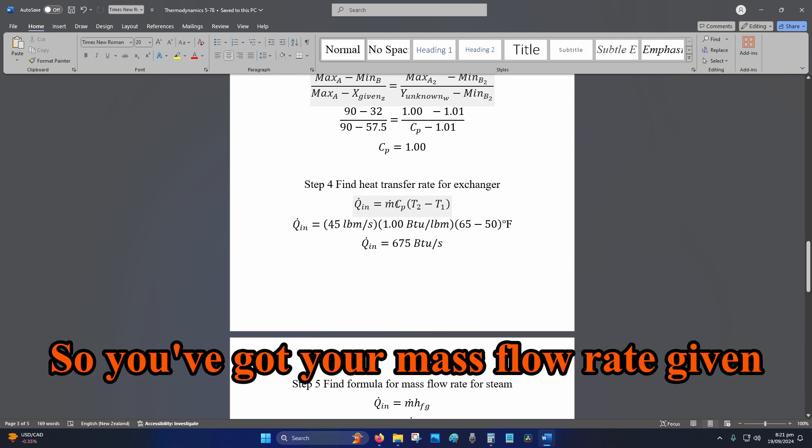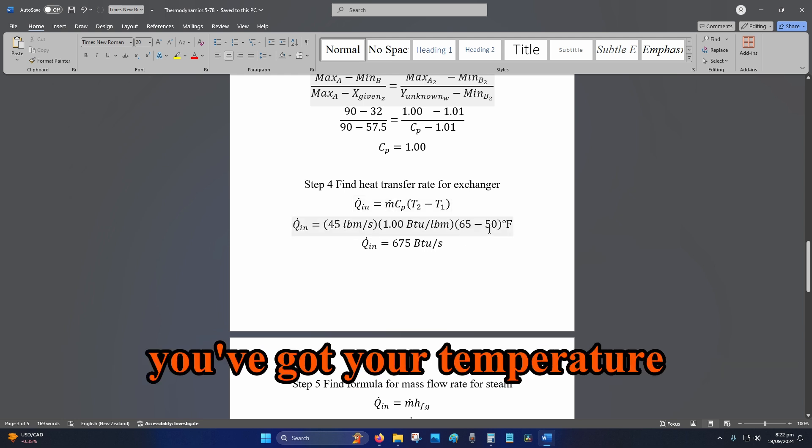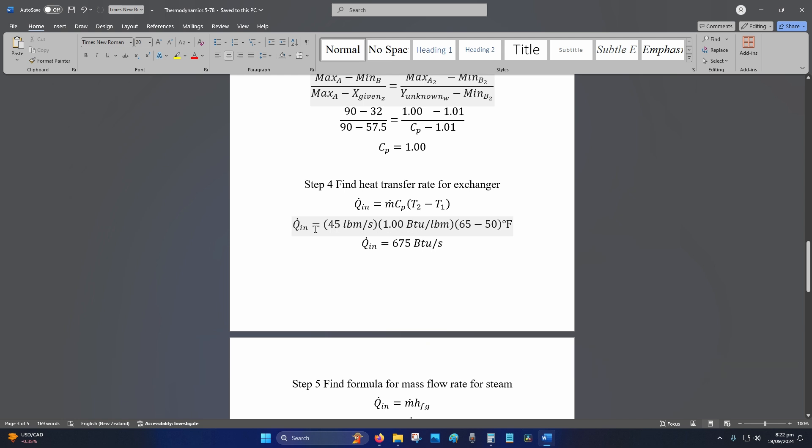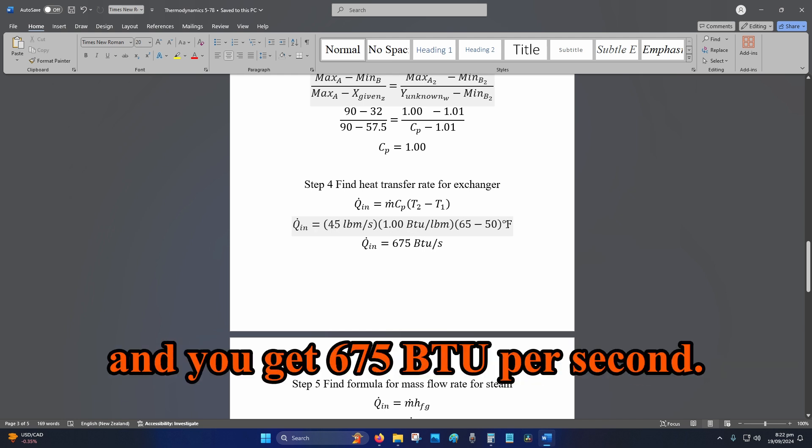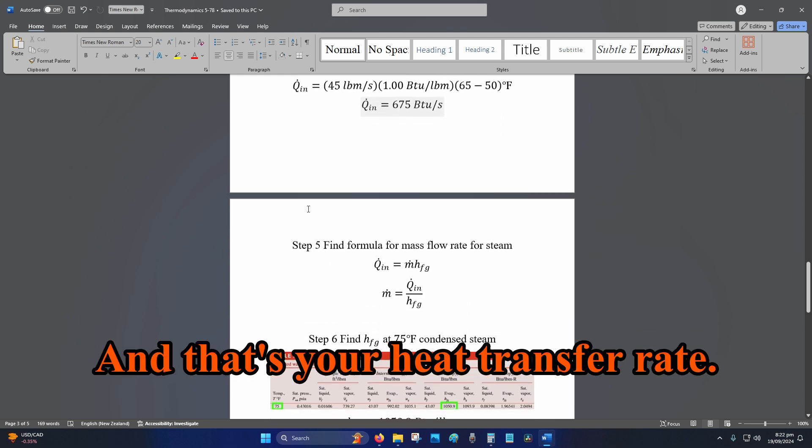So you've got your mass flow rate given in the question and then you've got your temperature given. The Cp is what we just worked out. So you multiply everything and you get 675 BTU per second, British thermal units per second. And that's your heat transfer rate.